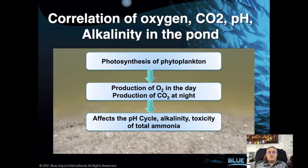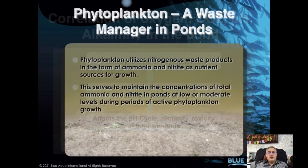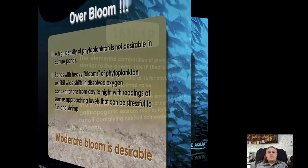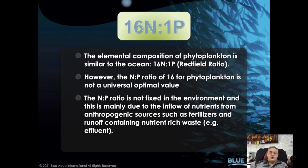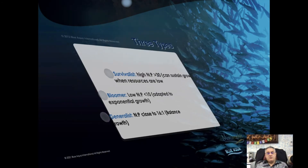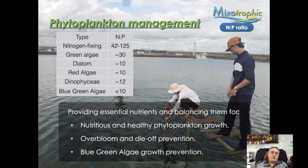Phytoplankton are the first link in the food chain in a shrimp pond, and they are very important in regulating oxygen, carbon dioxide, pH, and alkalinity. They are also waste managers, but an over-bloom of phytoplankton can always cause problems. Many farmers know how to bloom phytoplankton but don't know how to control it — a moderate bloom is always desirable. The nitrogen-to-phosphorus ratio in phytoplankton is very important. The Redfield ratio in the ocean is 16:1, but for shrimp ponds we have different categories: nitrogen-fixing, green algae, diatoms, red algae, dinoflagellates, and blue-green algae. I recommend an N:P ratio of around 20 for a brownish-green bloom.